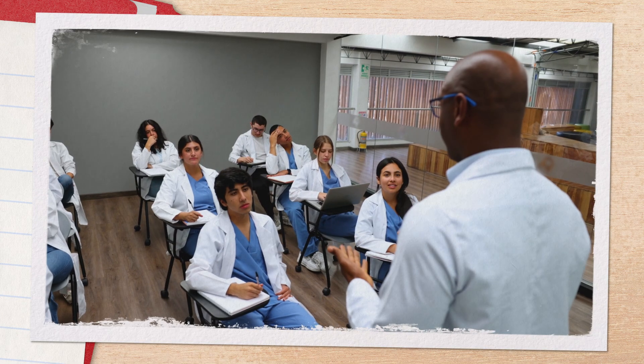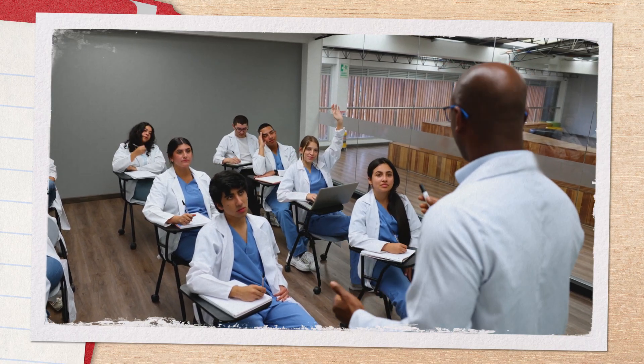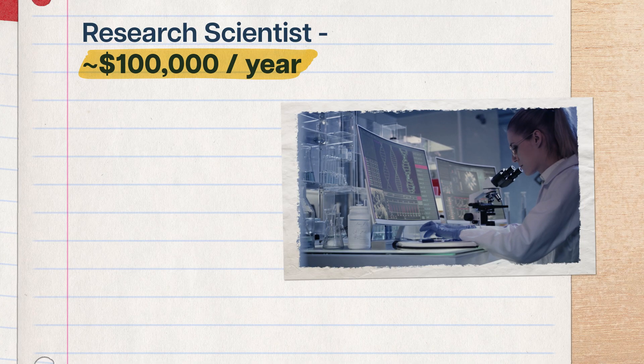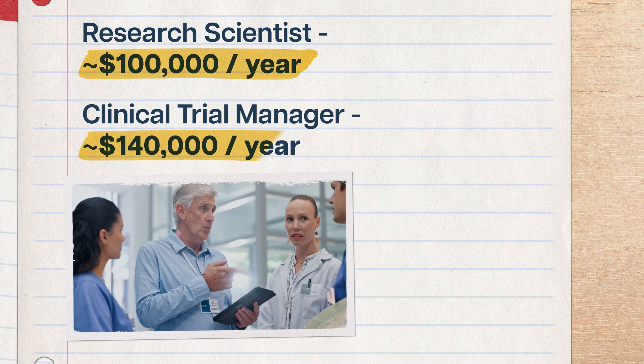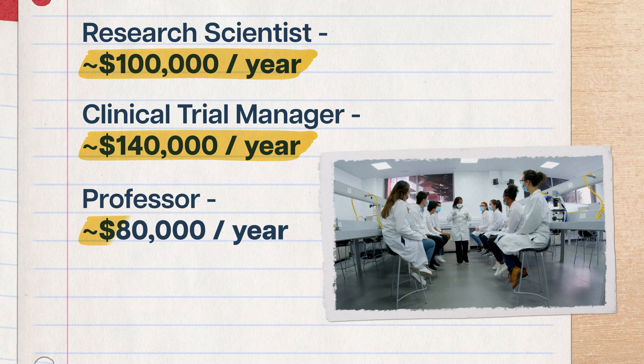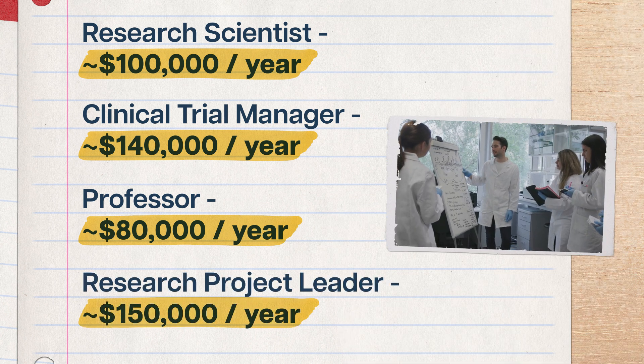If you want to climb even farther up the research ladder, you could do what a lot of neuro majors do—and go back to school. With a master's in neuroscience, you can work as a research scientist and make an average of $100,000 a year, or a clinical trial manager and make around $140,000 a year. And with a PhD, you could become a professor of neuroscience for an average of about $80,000, or a research project leader for something like $150,000.